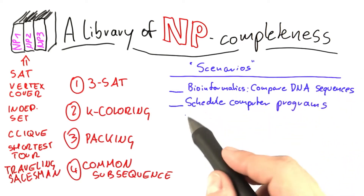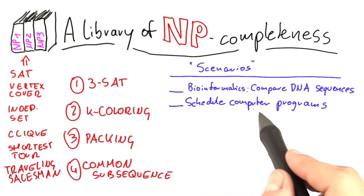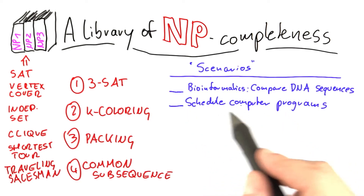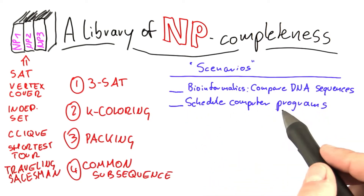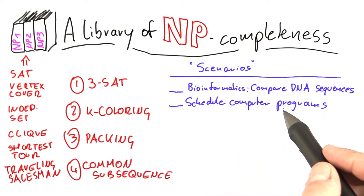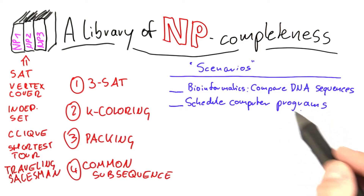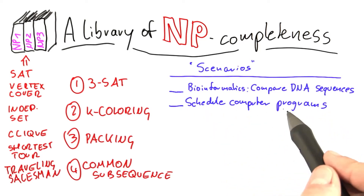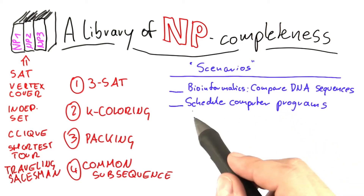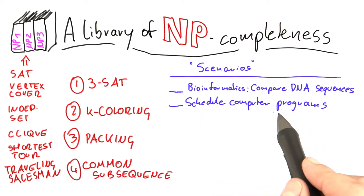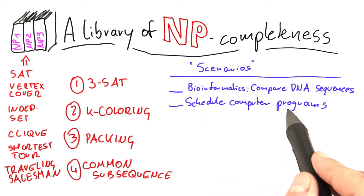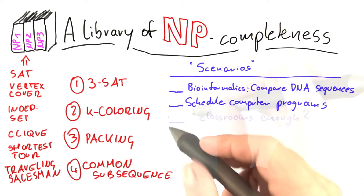You could have a scenario where you want to schedule computer programs. What I mean by this is you have a bunch of computer programs, you know approximately how much time each of those programs is going to take, and you have a number of machines. You want to get as much work done as possible within, say, the next hour, so you have to decide which program to run on which machine.